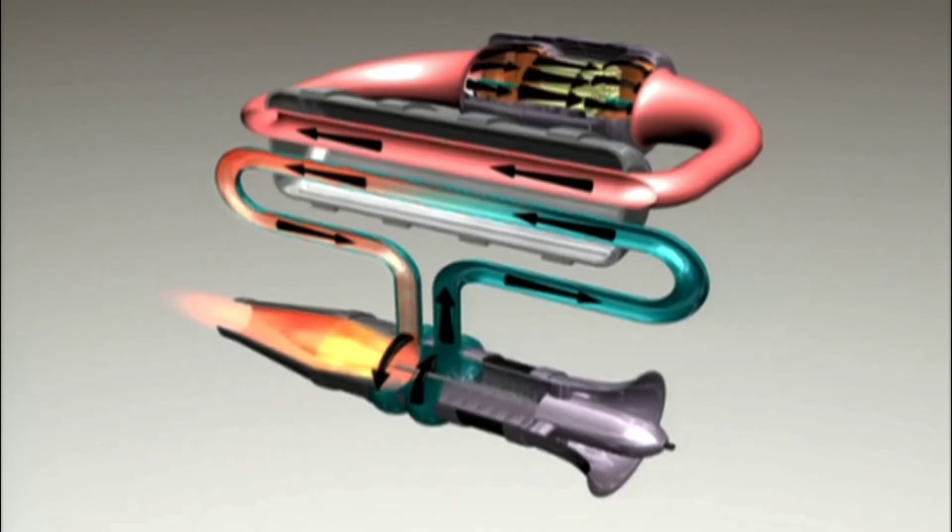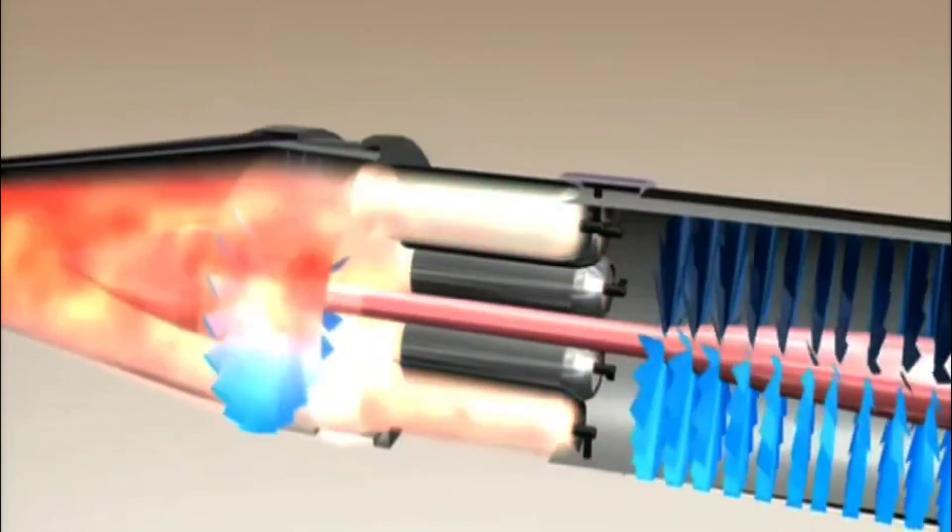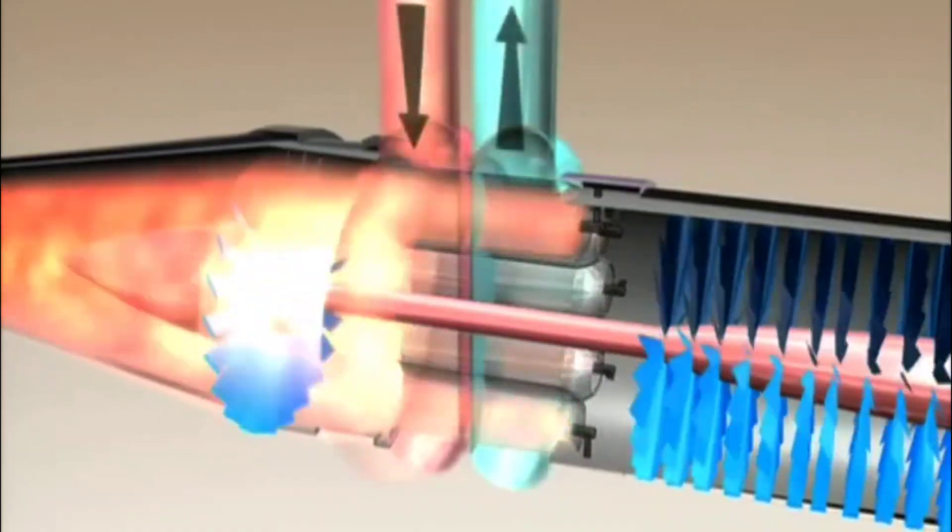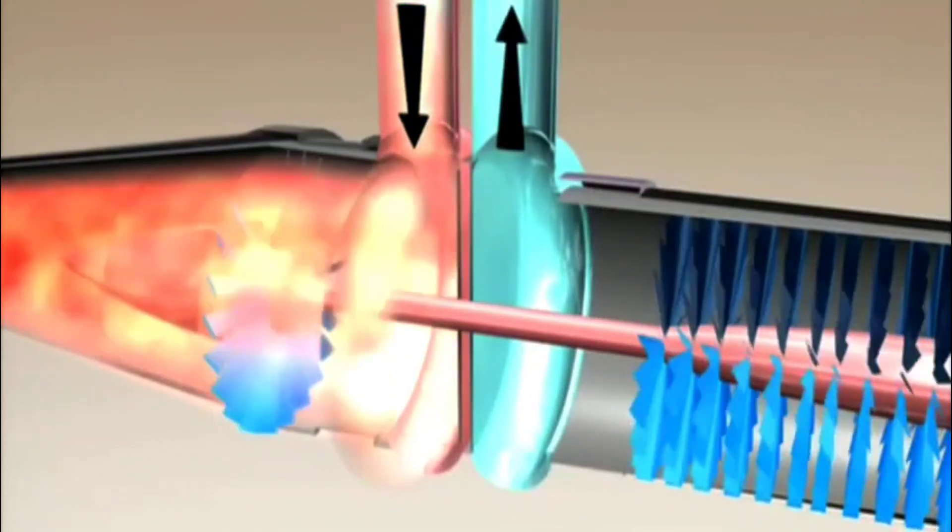The indirect cycle has the advantage of having some medium between the air and the hot reactor. Some other substance that will pass from the hot reactor, taking heat.